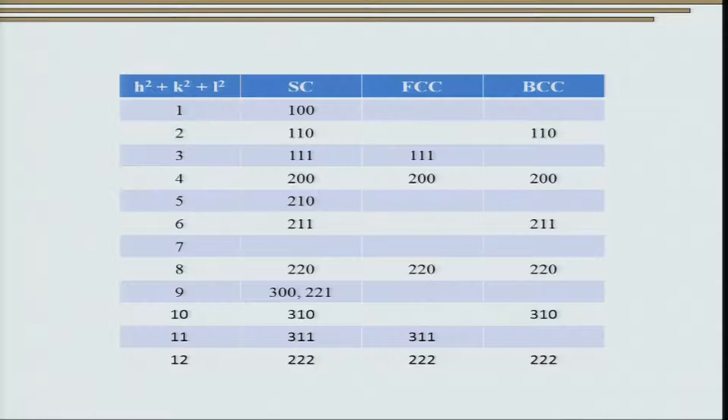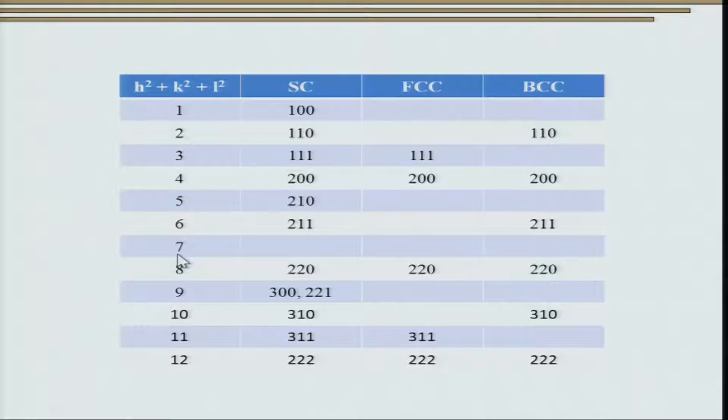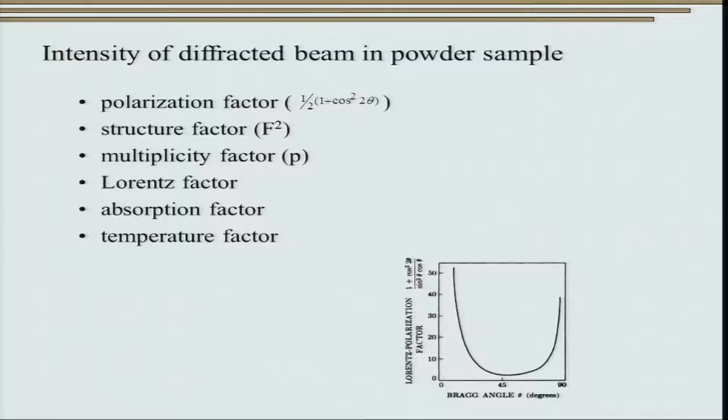The key point is that just by looking at the diffractogram of a single-phase material, we can make a guess about the crystal structure. An important caveat often missed in textbooks: even in the simple cubic case, there is no peak for h²+k²+l² = 7, simply because no three integer squares sum to 7. There is nothing special about this number.